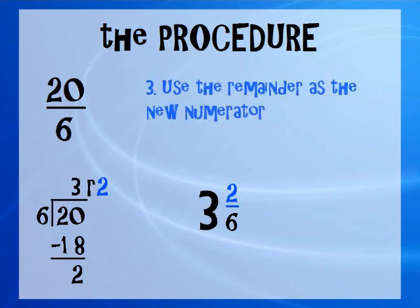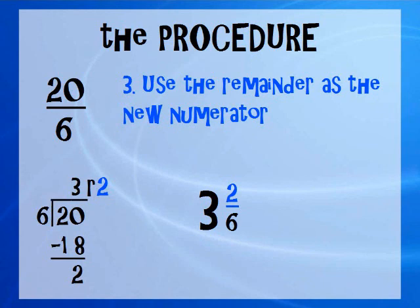And then we're going to use the remainder as the numerator. The remainder, what we have left over, are two pieces. But we still need 6 to make another whole group. So we rewrite the fraction as 2/6. Our mixed number is 3 and 2/6.